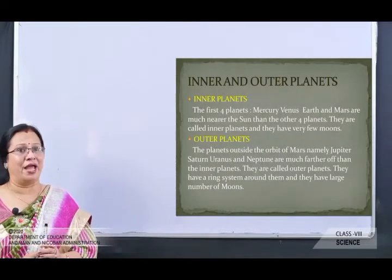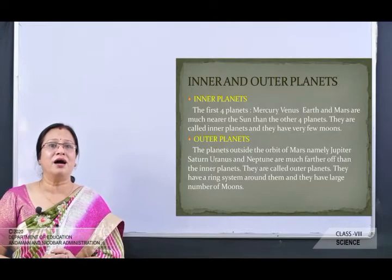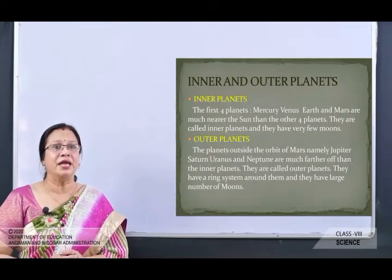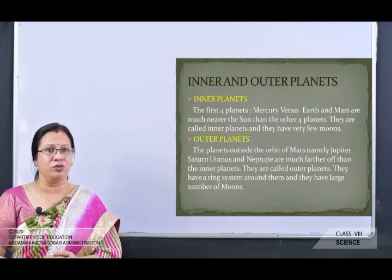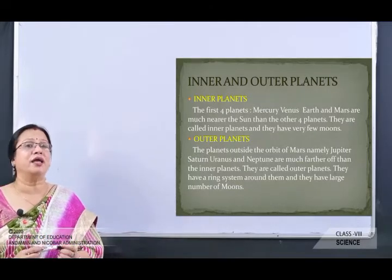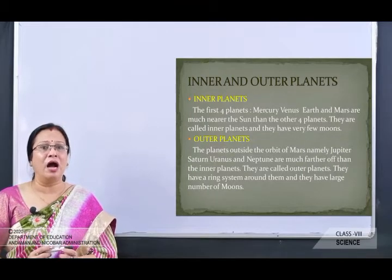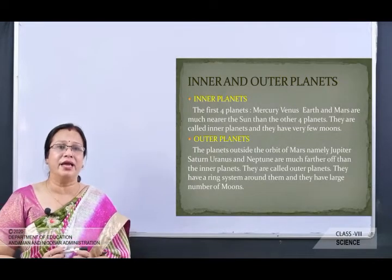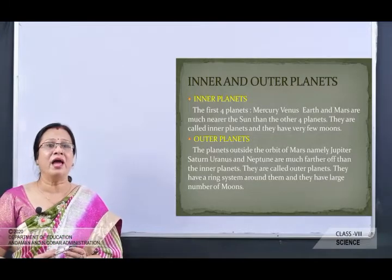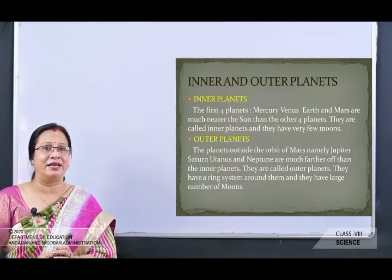The first four planets — Mercury, Venus, Earth and Mars — are much nearer to the sun than the other four, so they are known as inner planets and have very few moons. The planets outside the orbit of Mars — Jupiter, Saturn, Uranus and Neptune — are much farther from the sun and are called outer planets. They have ring systems around them and a large number of moons or satellites.